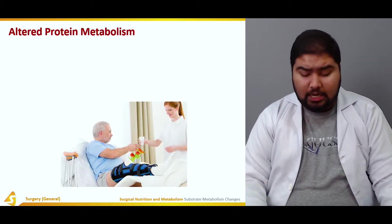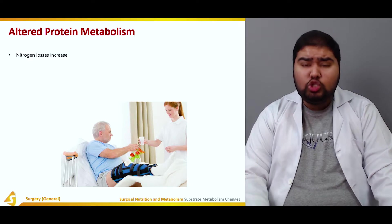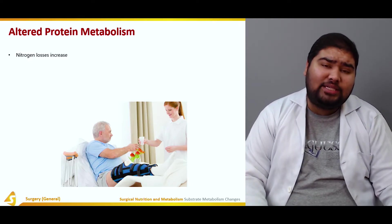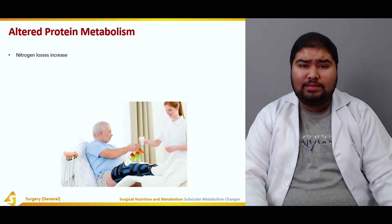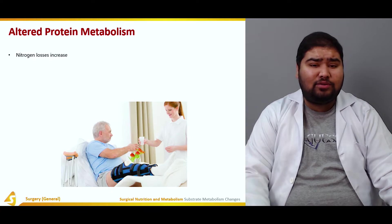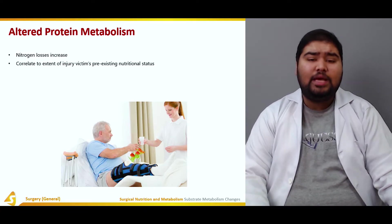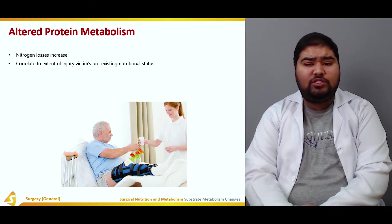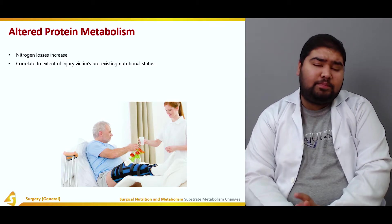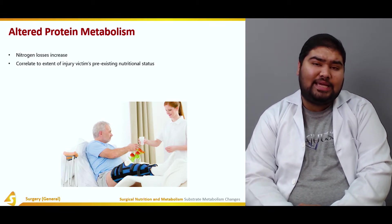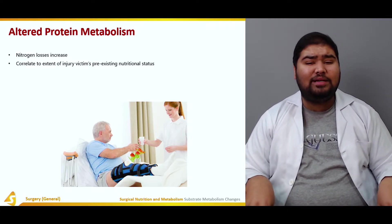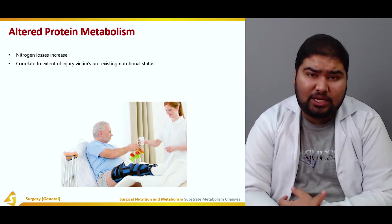Moving on to altered protein metabolism: nitrogen loss increases since there is a breakdown of the lean muscle mass. Negative nitrogen balance increases, and this correlates to the extent of the injury as well as the victim's pre-existing nutritional status — two key elements.